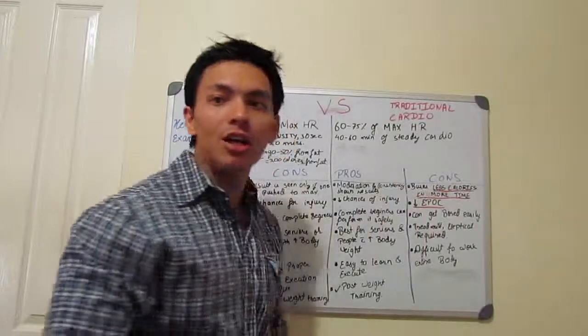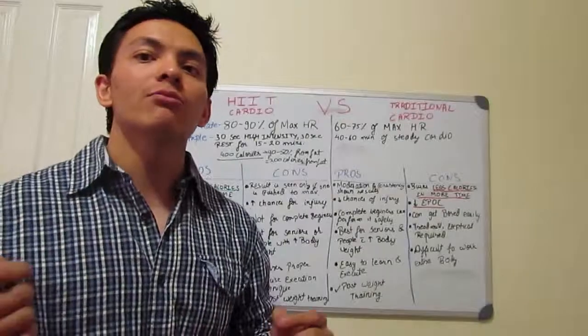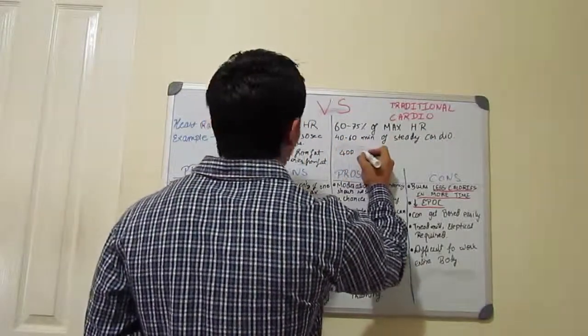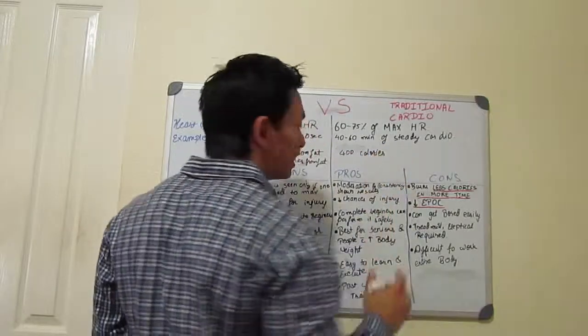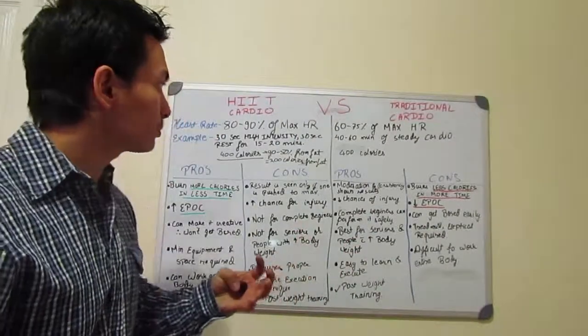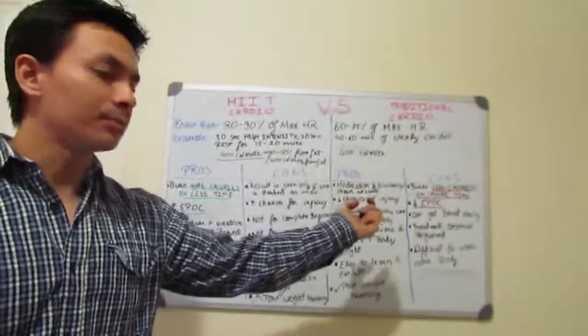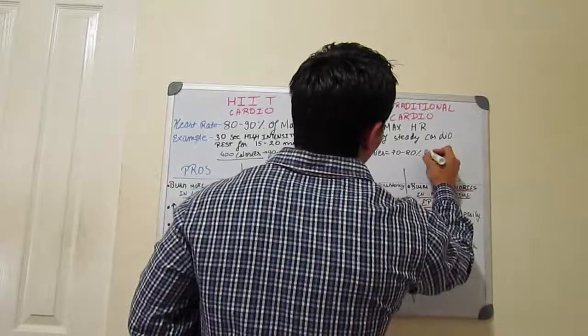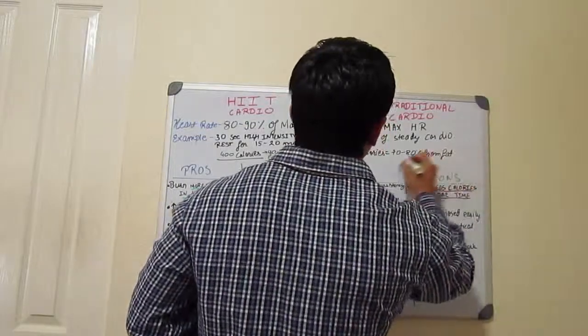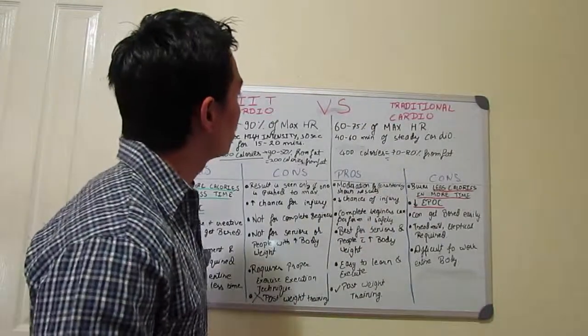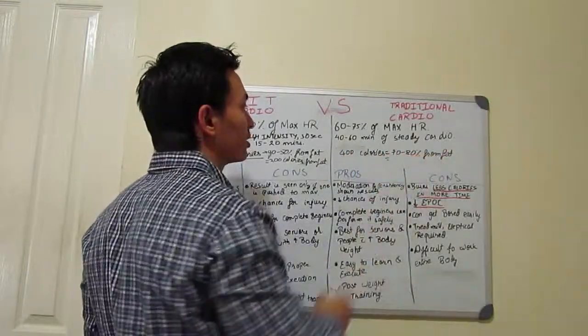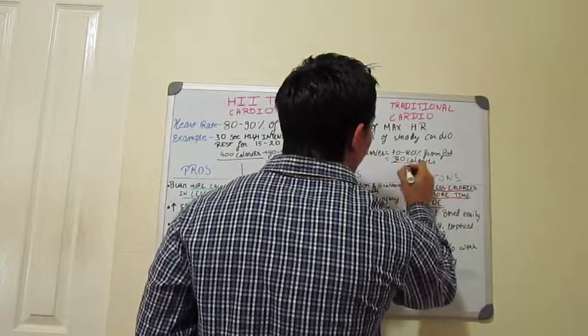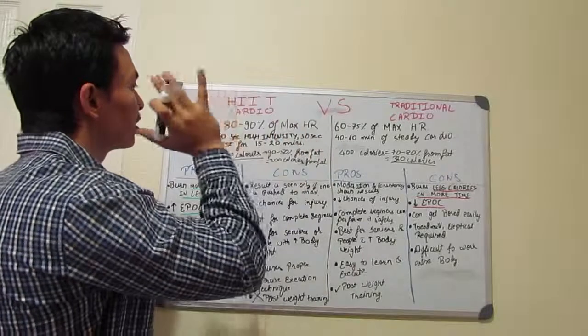Now, what are the cons of this kind of training? It burns less calories in more time. In 40 to 60 minutes, you burn about 400 calories in the same amount of time. Now, a lot of people will tell you you'll be burning much more of the calories from fat, about 70 to 80% from fat. 400 calories, 70 to 80% of calories is from fat, which is about 320 calories. You burn 320 calories in 40 minutes to an hour.